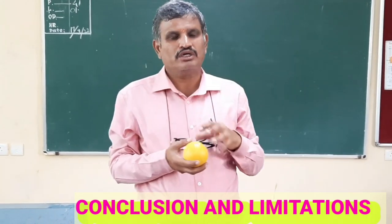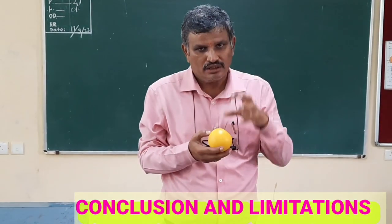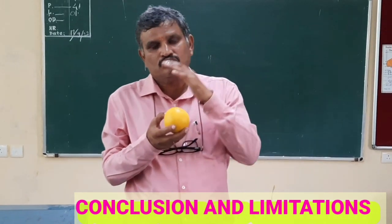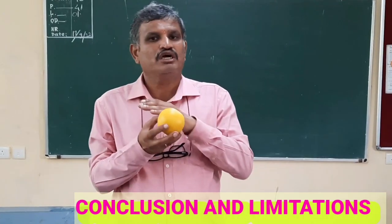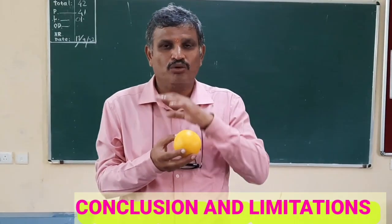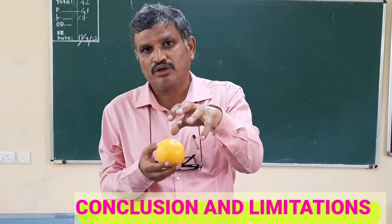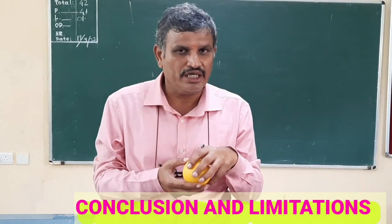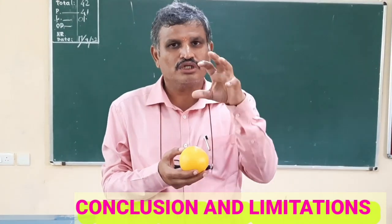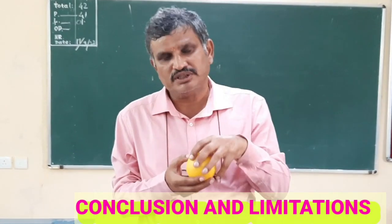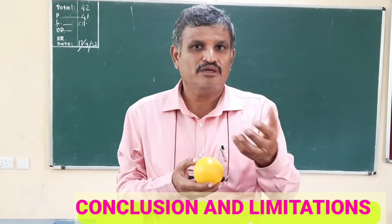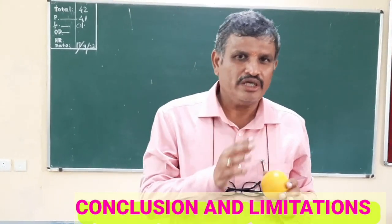You also understood that the total surface area of the hemisphere and the total surface area of the sphere are two different entities. The total surface area of the hemisphere is 3πr².